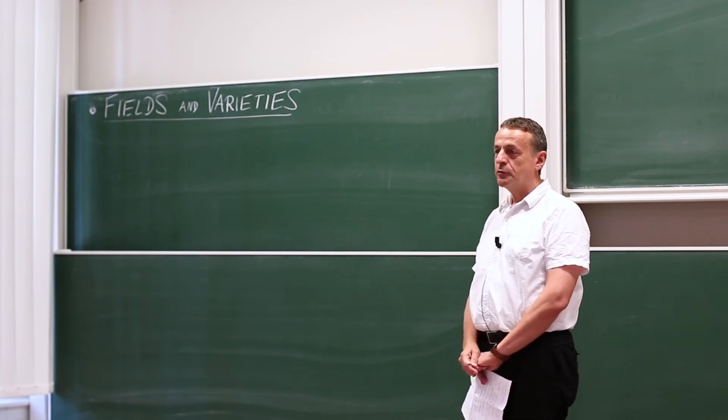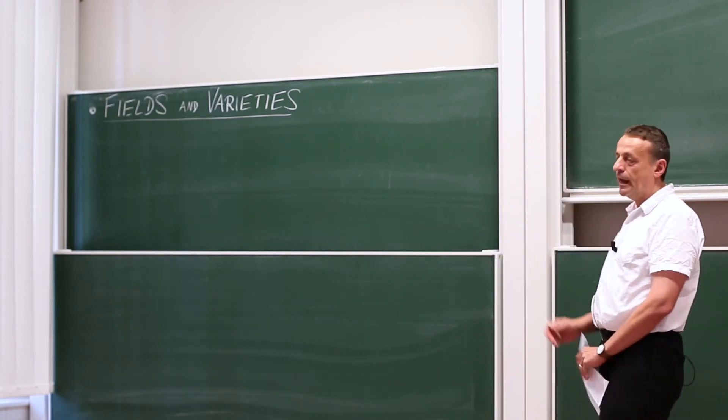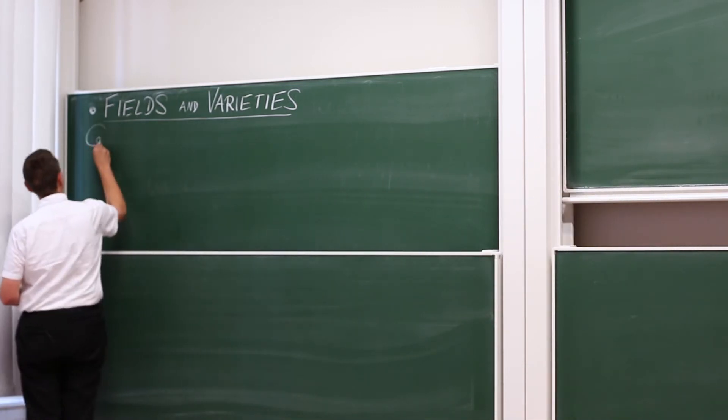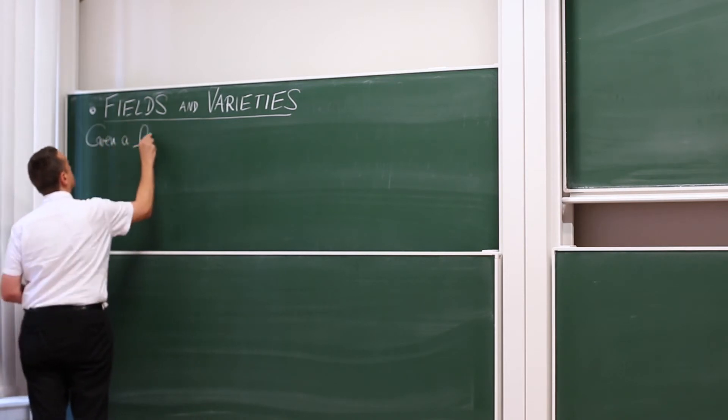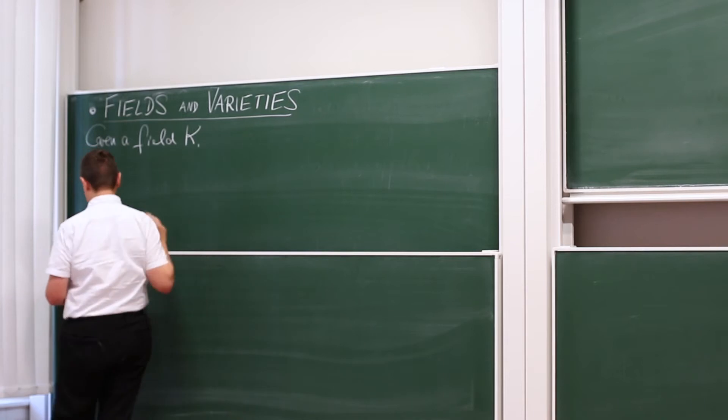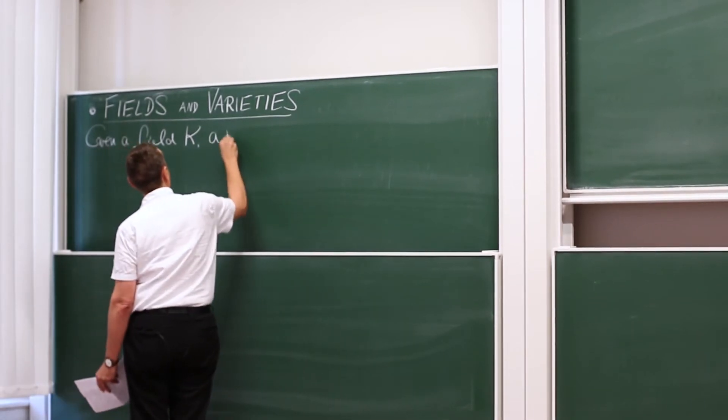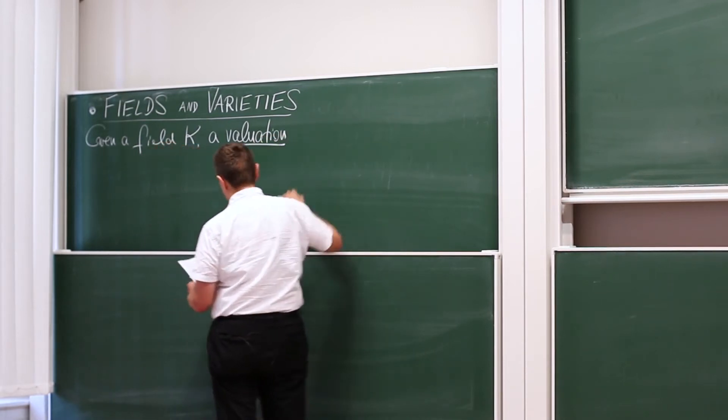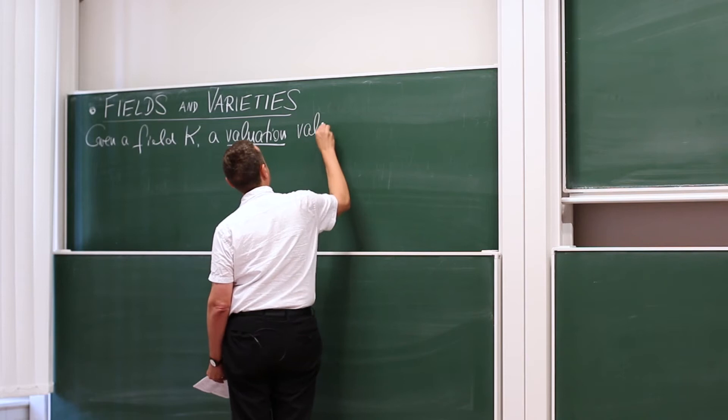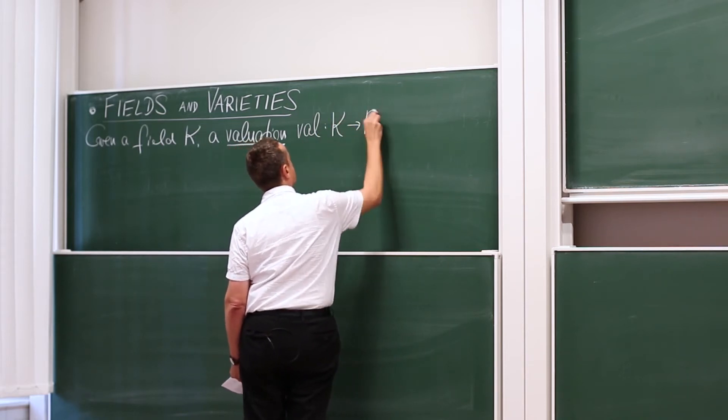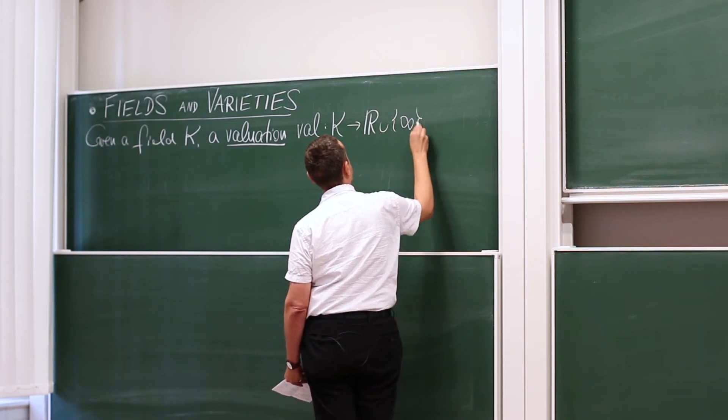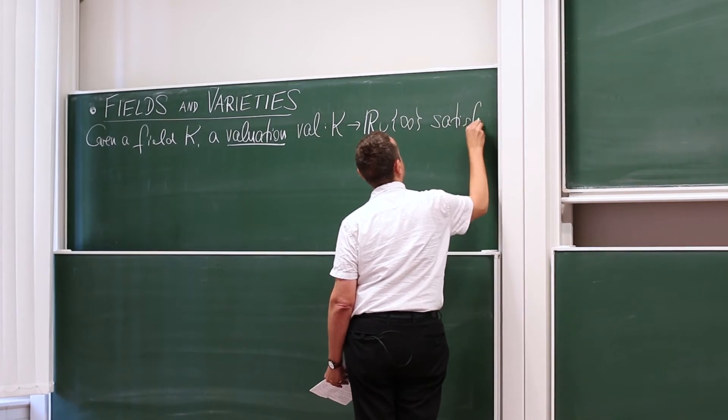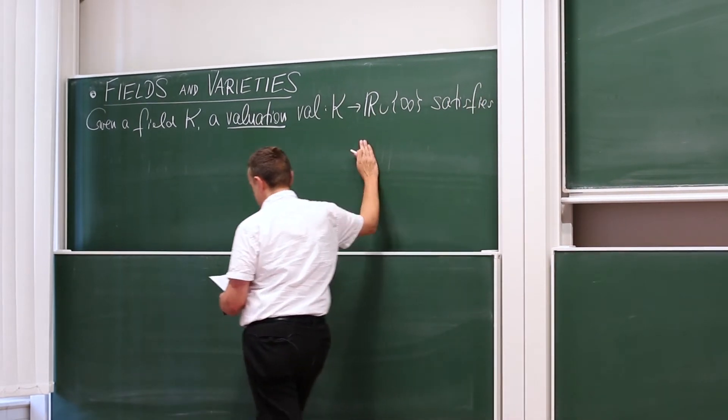So our third lecture will be about fields and varieties, the first half of Chapter 2. If we're given a field denoted K, we're going to say a valuation on this field is a map that takes the field elements to the real numbers extended by plus infinity that satisfies the following three axioms.